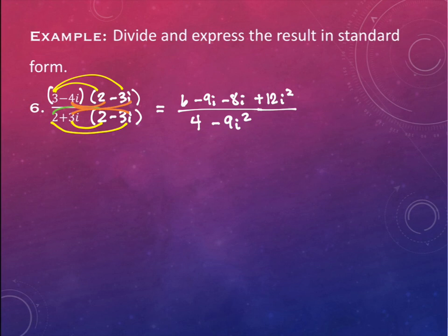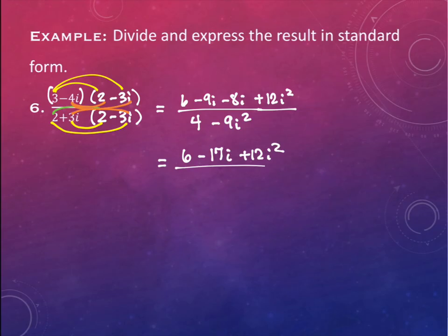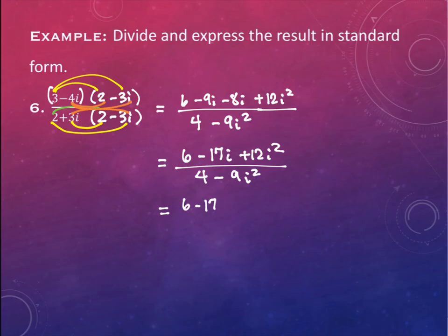I have a couple things I can combine. On the top, I have a negative 9i and a negative 8i — those I can combine. This gives me a negative 17i on top. What would I do in addition to that to simplify and clean it up? The i squareds equal negative 1. So in each location where I have an i squared, I'm going to end up having a negative 1.